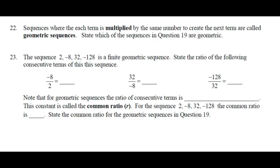A sequence where each term is multiplied by the same number to create the next term are called geometric sequences. State which of the sequences in question 19 are geometric. So what do we got? D, E, F. The sequence 2, negative 8, 32, negative 128 is a finite geometric sequence.